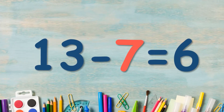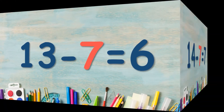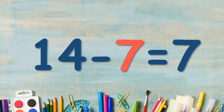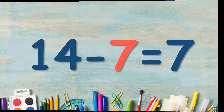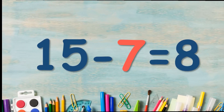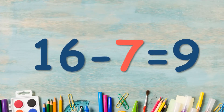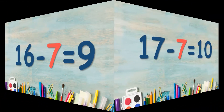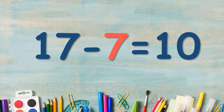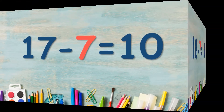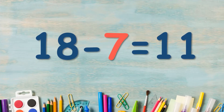13 minus 7 is equal to 6. 14 minus 7 is equal to 7. 15 minus 7 is equal to 8. 16 minus 7 is equal to 9. 17 minus 7 is equal to 10. 18 minus 7 is equal to 11.